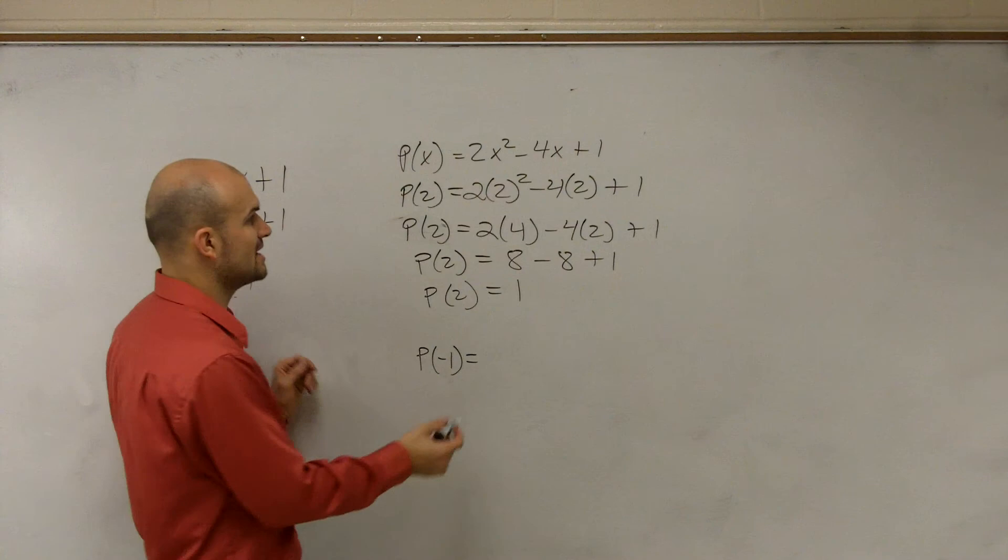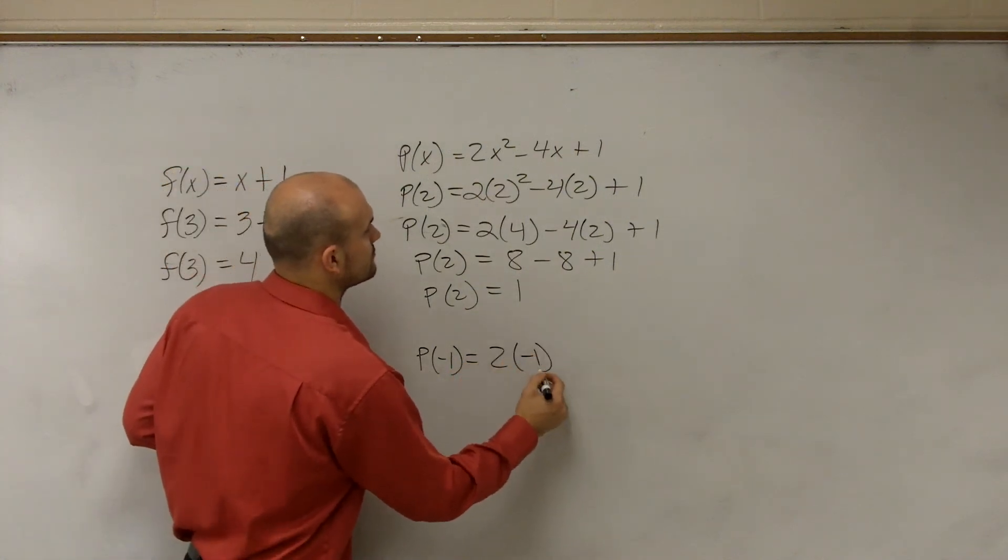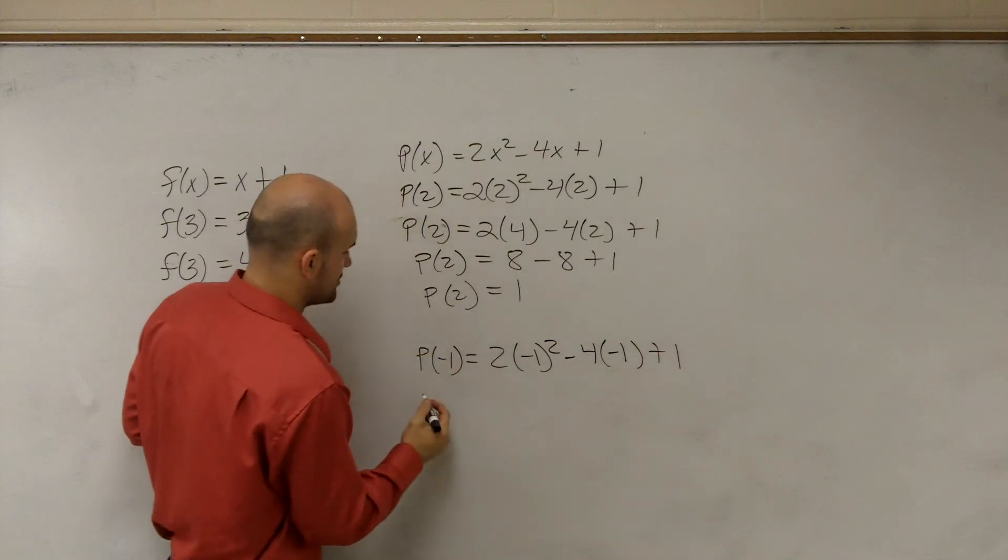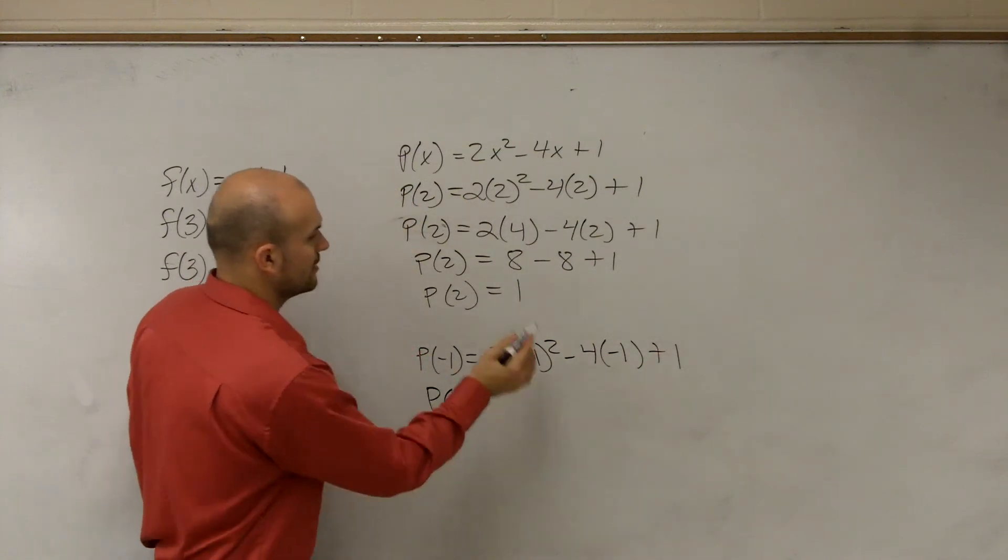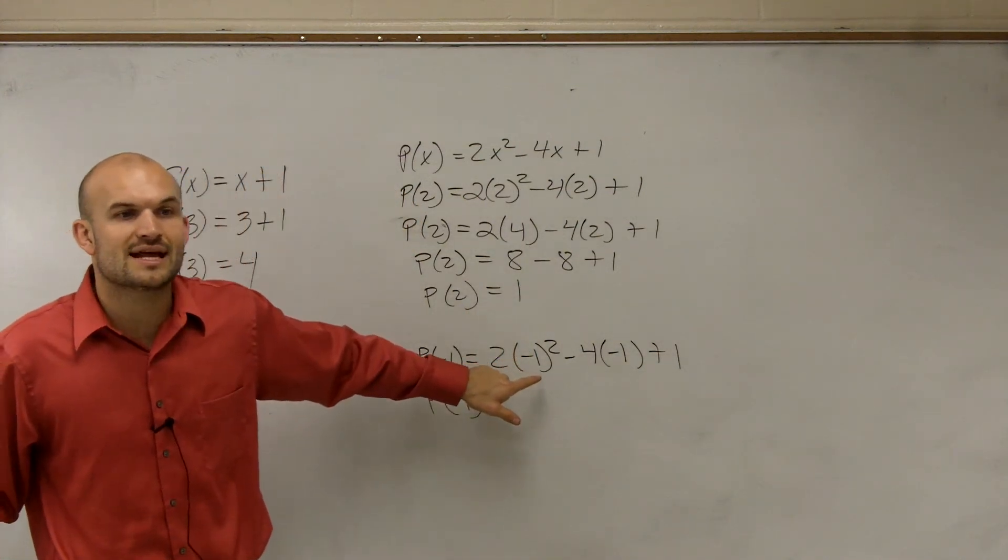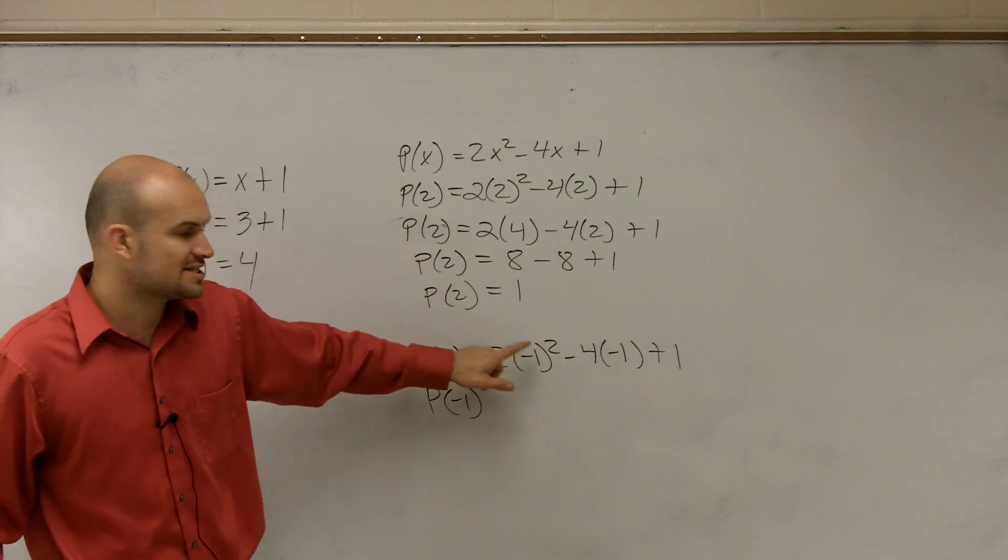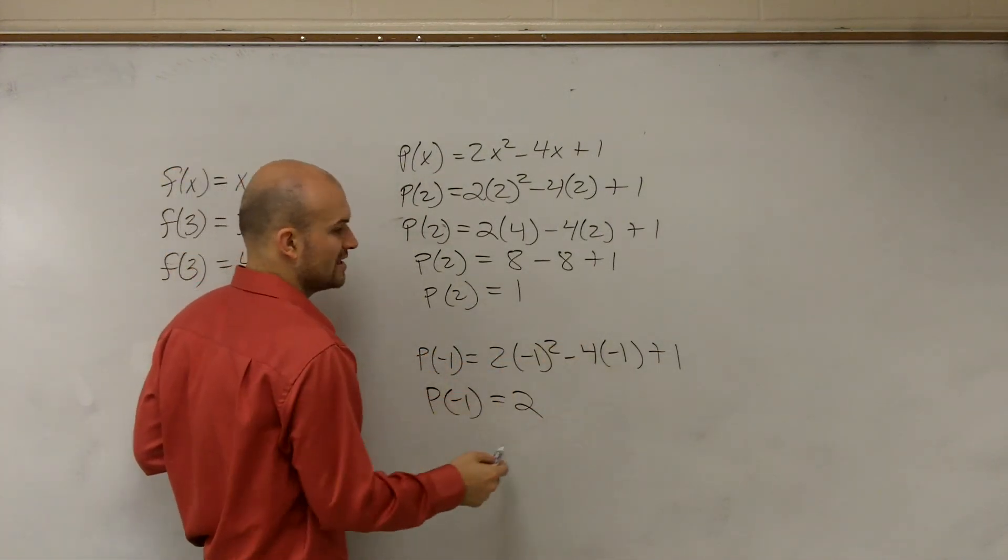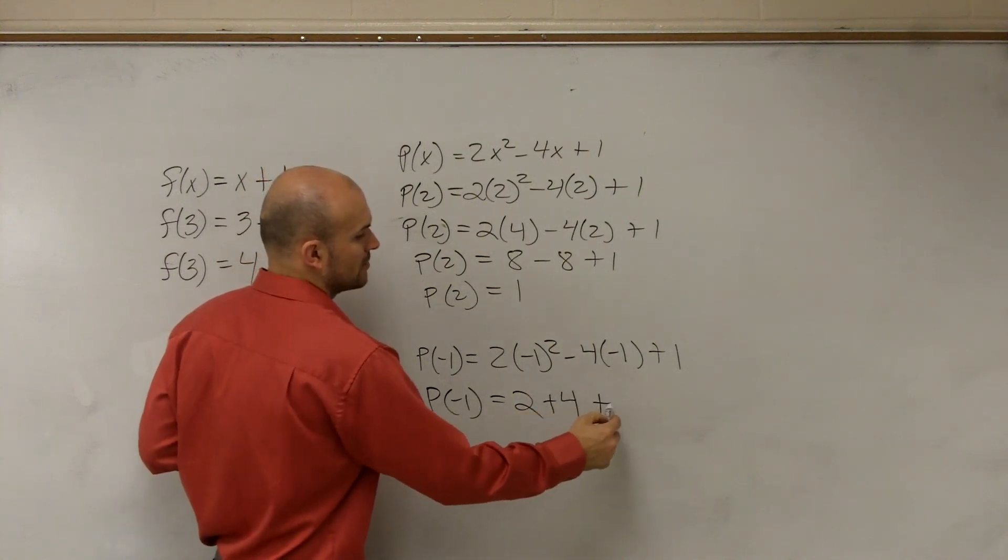So then, to do negative 1, you're just going to follow the same step. I'll do this one just a little bit. This one's going to be negative 1 times negative 1 is positive 1. Positive 1 times 2 is 2. Negative 4 times negative 1 is going to be a positive 4 plus 1.